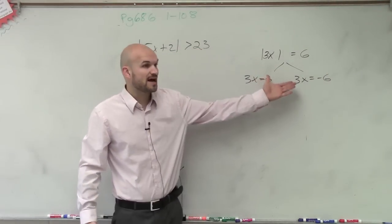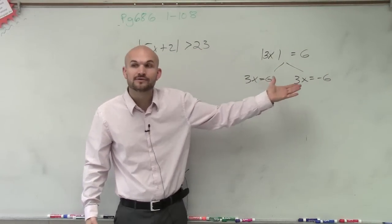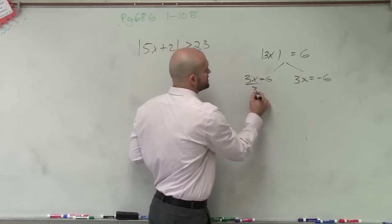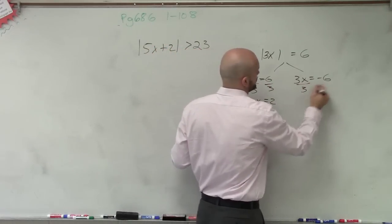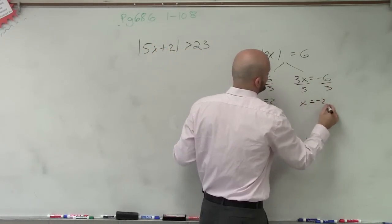So when you have an absolute value, you have to make sure you find both values. Because when we look at this, when we solved, x equals 2 and x equals negative 2.